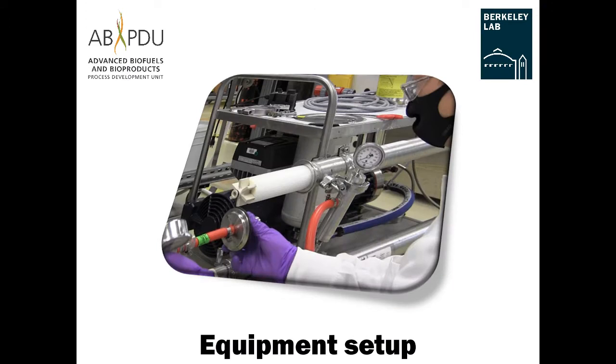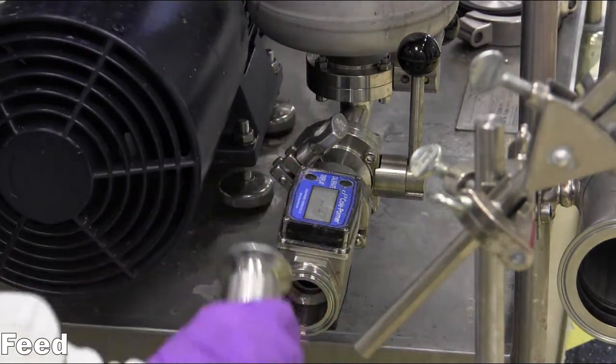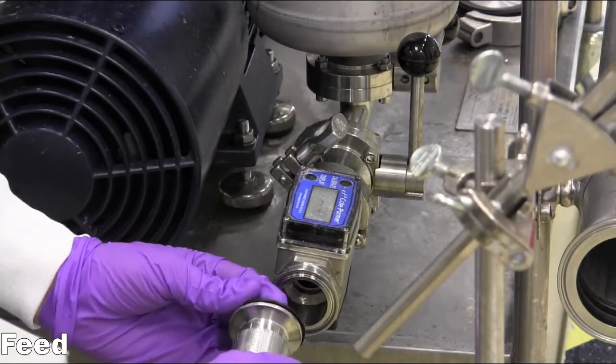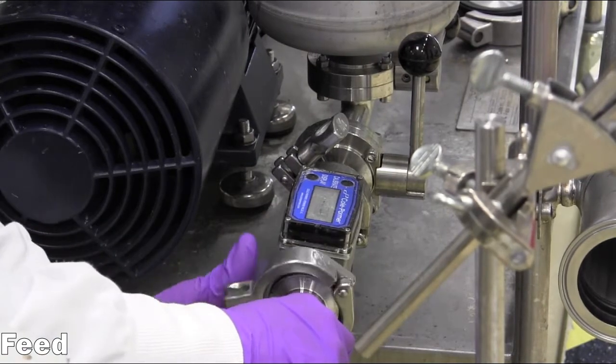Equipment setup: A hose is connected to the digital flow meter attached to the feed inlet port below the small feed tank via a sanitary tri-clamp connection.